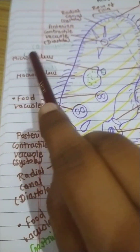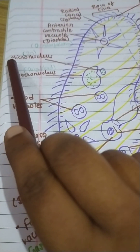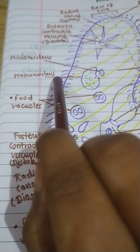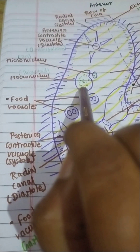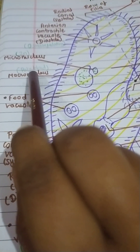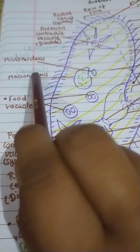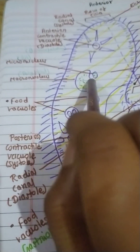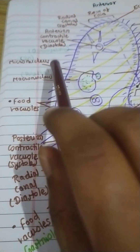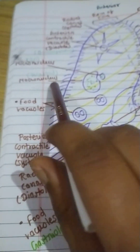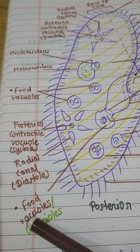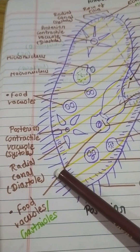Paramecium consists of two nuclei: the micro nucleus, which is small in size and diploid, and the macro nucleus, which is big in size and polyploid.